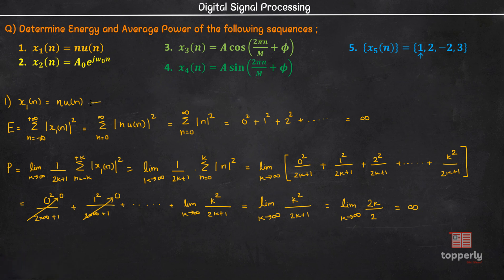So as you can see, the energy of this sequence is infinite and the average power is also infinite. Therefore this sequence is neither an energy signal nor a power signal.